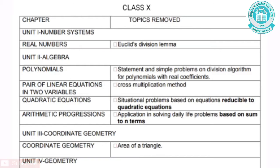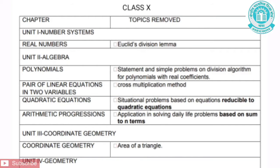The second unit is Algebra. The chapter under this unit is Polynomials. The topic removed from this chapter is Statement and Simple Problems on Division Algorithm for Polynomials with Real Coefficients. The second chapter under Algebra is Pair of Linear Equations in Two Variables. The topic removed from this chapter is the Cross Multiplication Method.